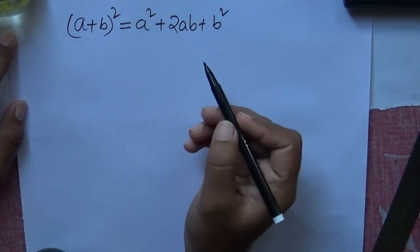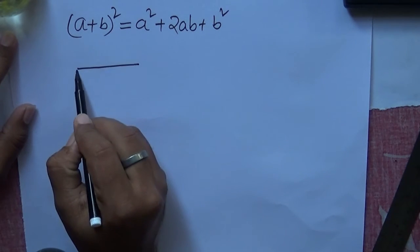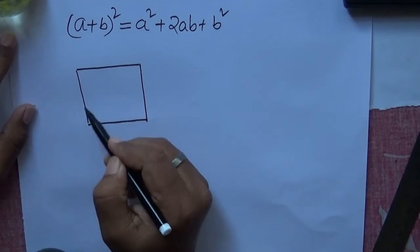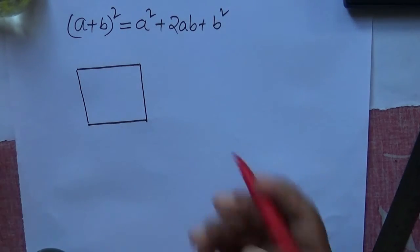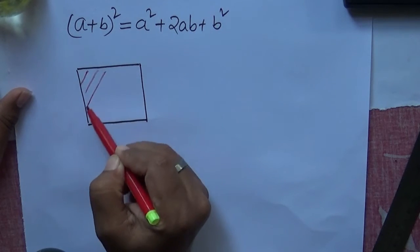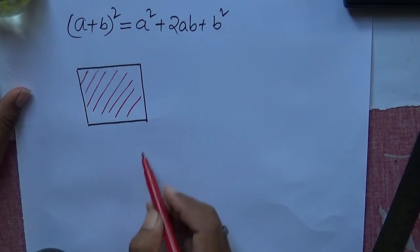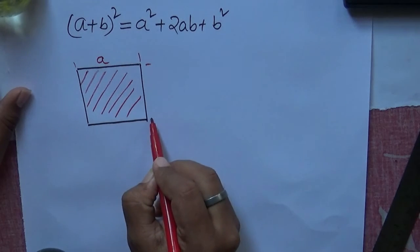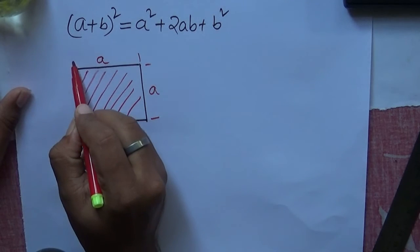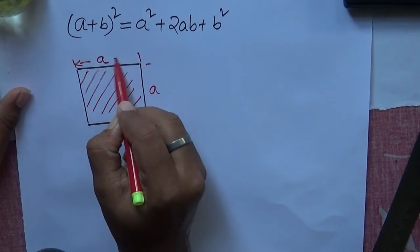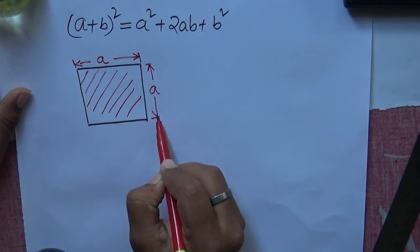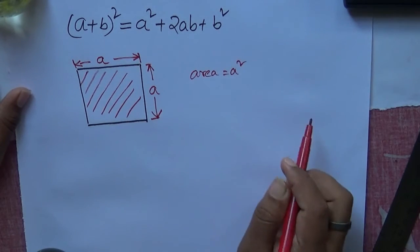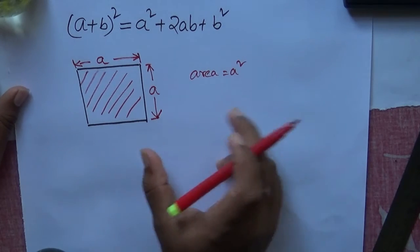Let's draw a square. Here is a square on the page — it represents the area of the square. If one side is 'a', the other side is also 'a', so the area is a². We all know this from geometry.